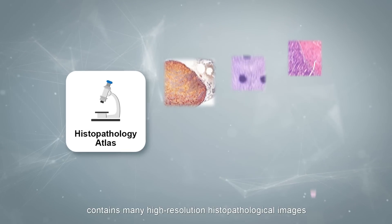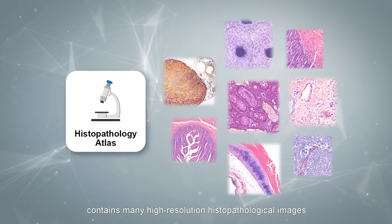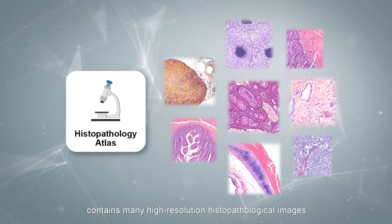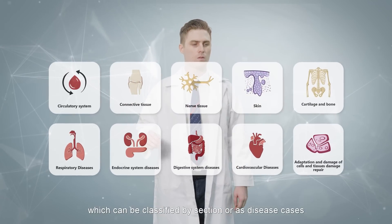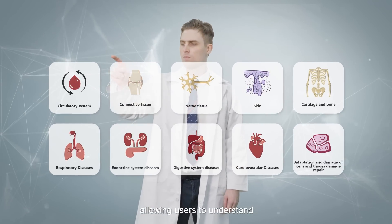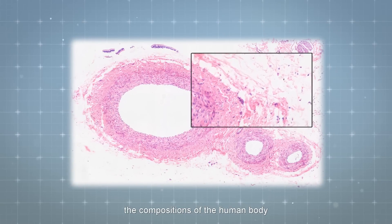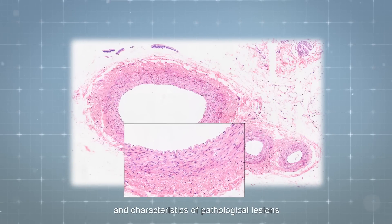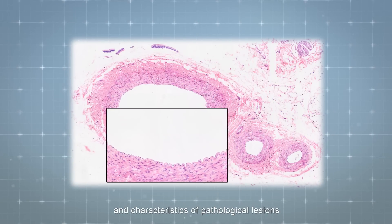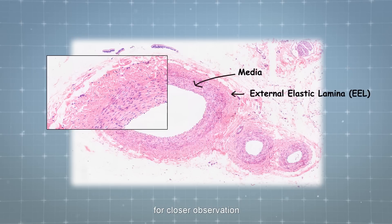Histopathology Atlas contains many high-resolution histopathological images which can be classified by section or as disease cases, allowing users to understand the compositions of the human body and characteristics of pathological lesions. You can enlarge and mark the image anywhere for closer observation.